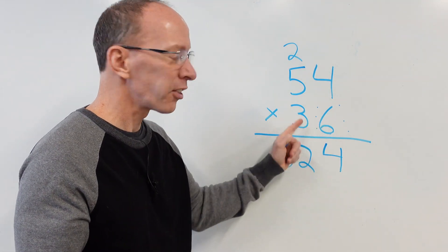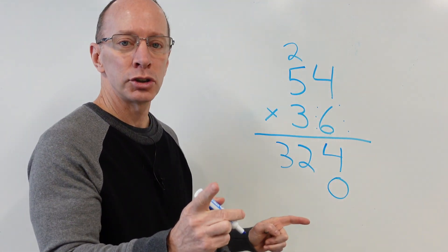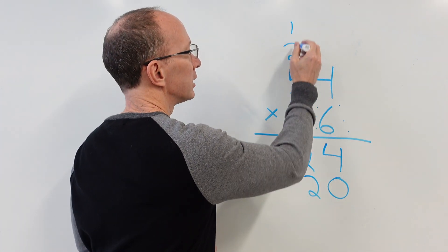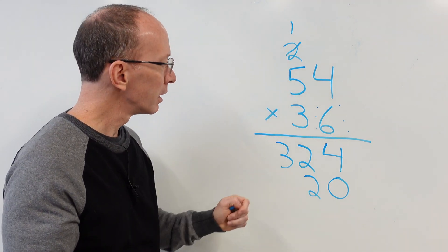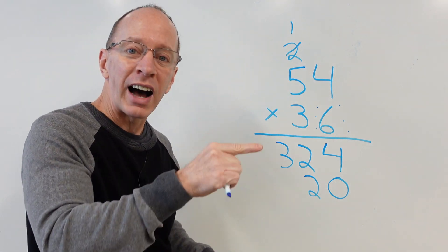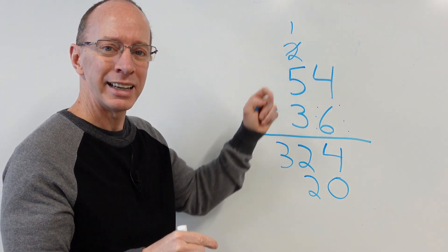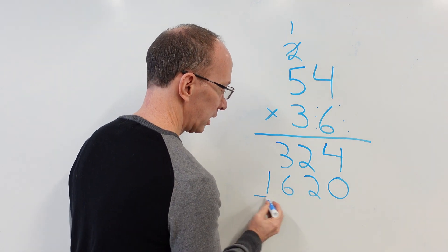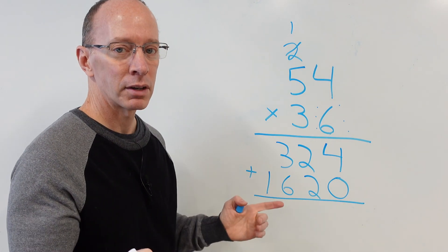All right. Now we've multiplied the tens. Remember, this is like a 30. We just put a placeholder right here. Three times four is 12. Put the two here. Put the one on top of there. Put a little line through that one so you don't get that mixed up. Three times five is five, 10, 15. All right. 15 plus the one is 16. So you put the 16 right here. Put a line underneath here. The plus symbol.